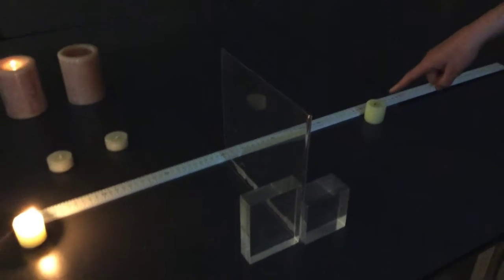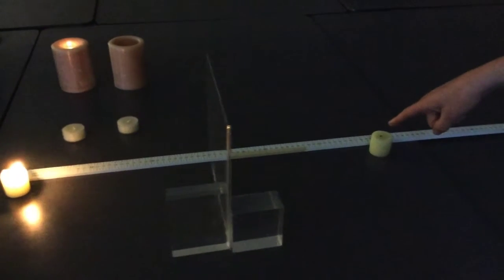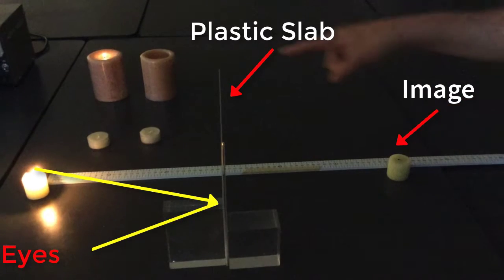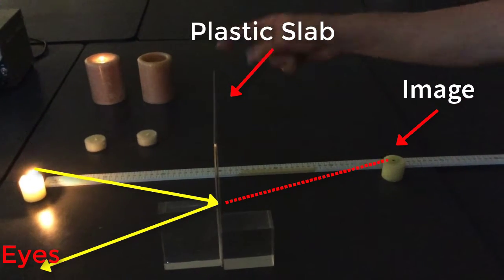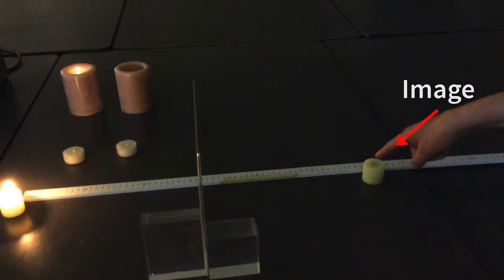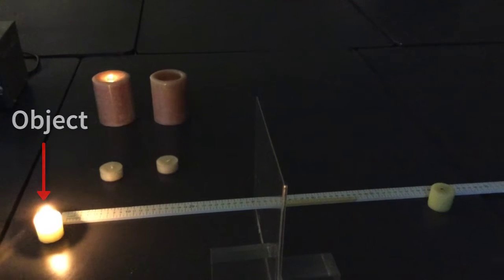Once again, this candle is unlit, but it will appear lit. And what it allows me, it will allow me to measure the distance from the mirror, or from the slab, from the surface, to the image, where the image is, and from the surface, where the object is. And for that, I will need to have a ruler, a meter stick.